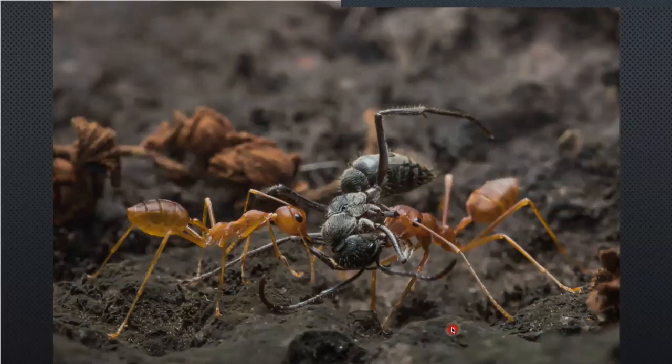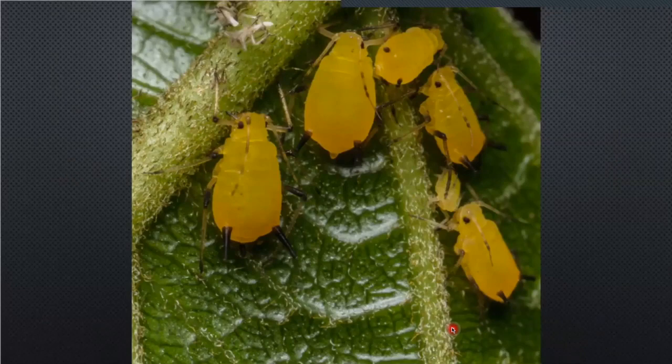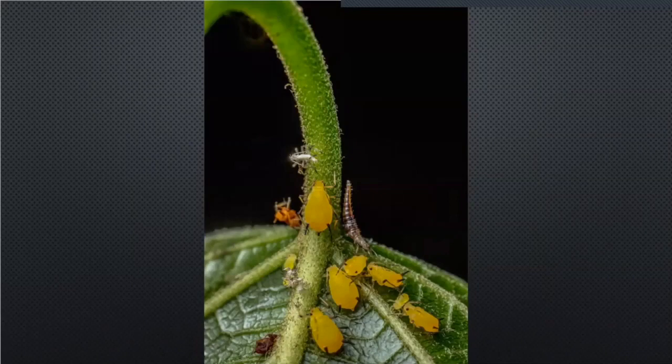This is a capture using the MPE-65. What you see here are aphids — very, very tiny — being attacked by ladybug larvae. The ladybug larvae are feeding on these aphids, which suck sap out of plants and are harmful to them. The ladybug larvae kill and feed on the aphids. This is extreme close-up photography at its finest.